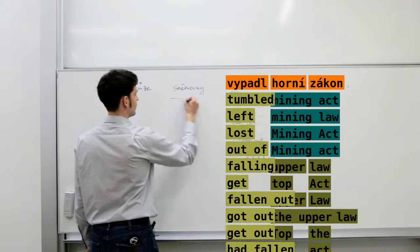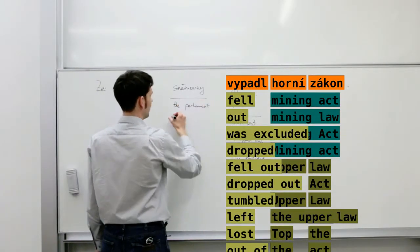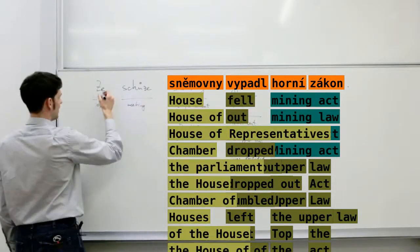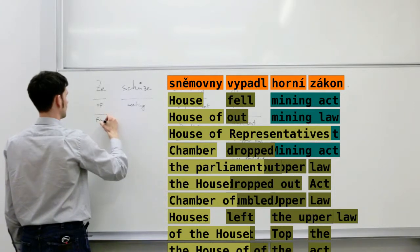Zákon as law. And similarly for all the phrases in this sentence. Then sněmovny or sněmovna, house of representatives, house of deputies. Schůze is a meeting. And this ze is a preposition such as of or from.